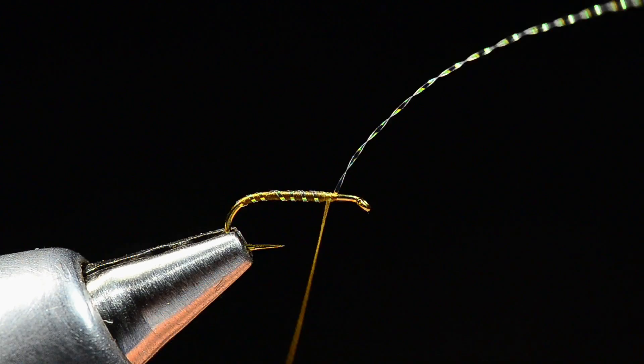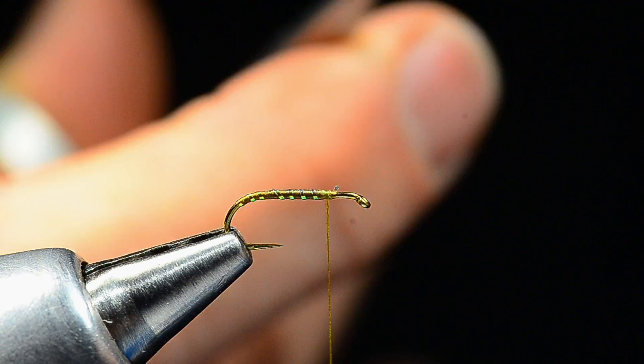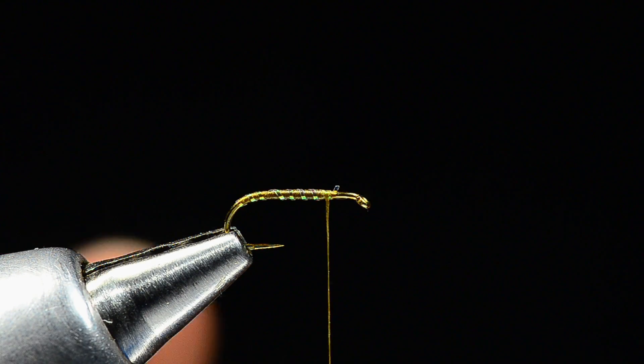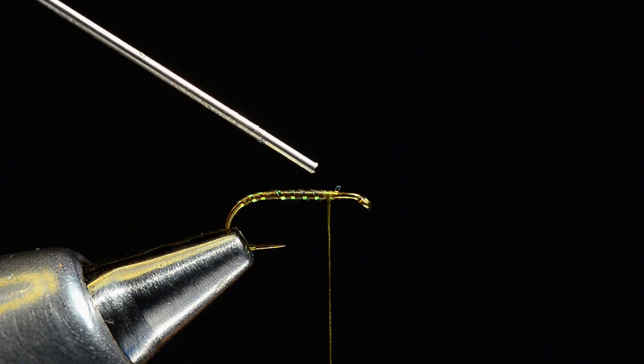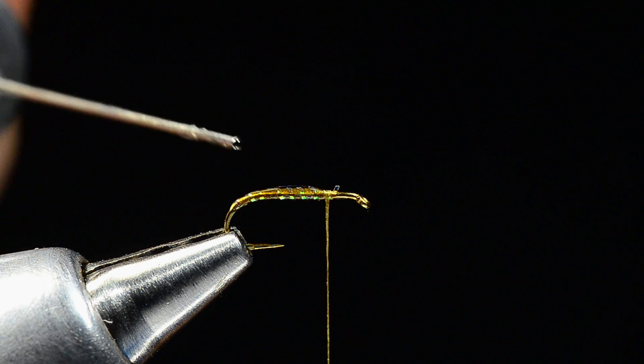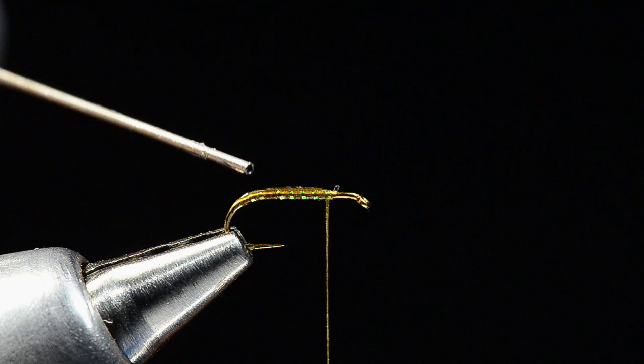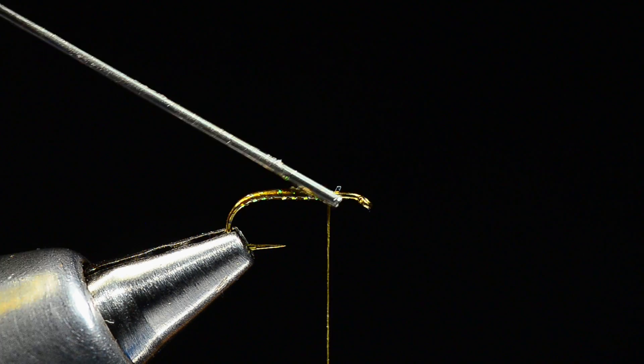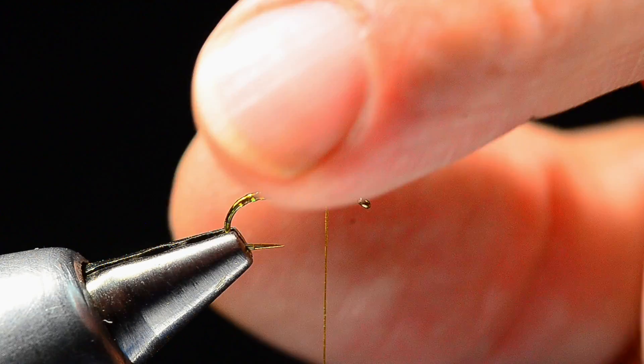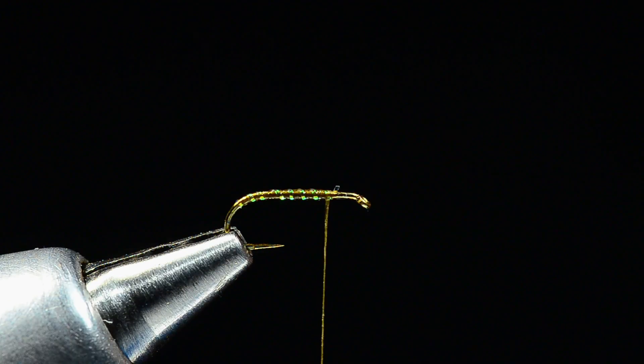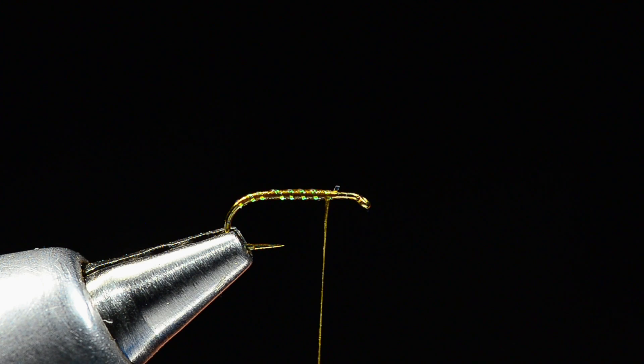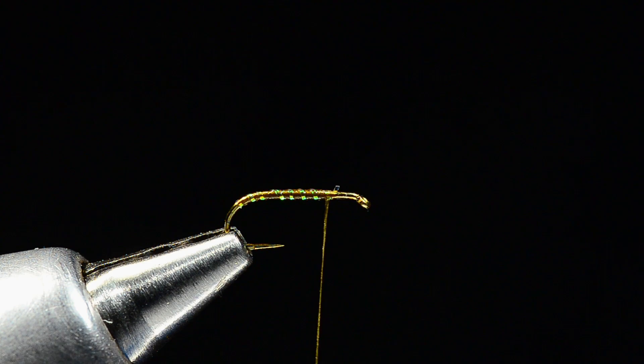I'll tie that off. Now it's not a bad idea on a body like this to put a little head cement over the top of that. You can certainly use solar res, I think head cement is probably a little lighter on dry flies, doesn't weigh the fly down as much.